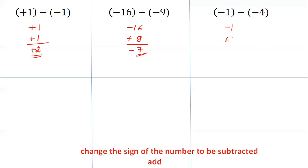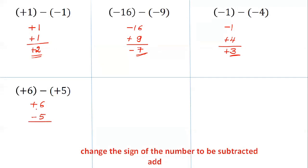Now subtract minus 4 from minus 1. Write the first number as it is: minus 1. Change the sign of the second number. Look at their signs — they are different, so subtract: 4 minus 1 is 3. The answer is plus 3 because the bigger number has the positive sign. Next: plus 6 subtract plus 5 — plus 5 changes to minus 5. 6 minus 5 is 1. Answer: plus 1.